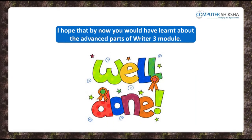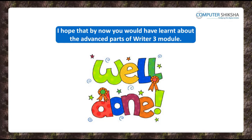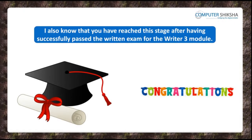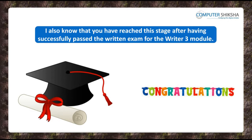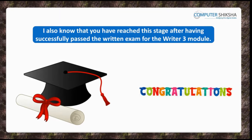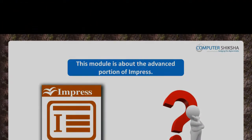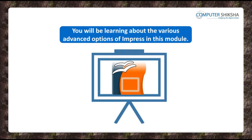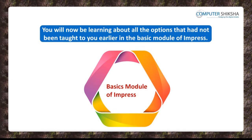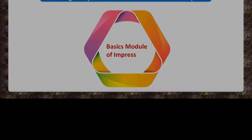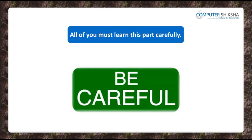I hope that by now you have learned about the advanced parts of Writer 3 module. I also know that you have reached this stage after having successfully passed the written exam for the Writer 3 module. This module is about the advanced portion of Impress. You will be learning about the various advanced options of Impress in this module — all the options that had not been taught to you earlier in the basic module of Impress.